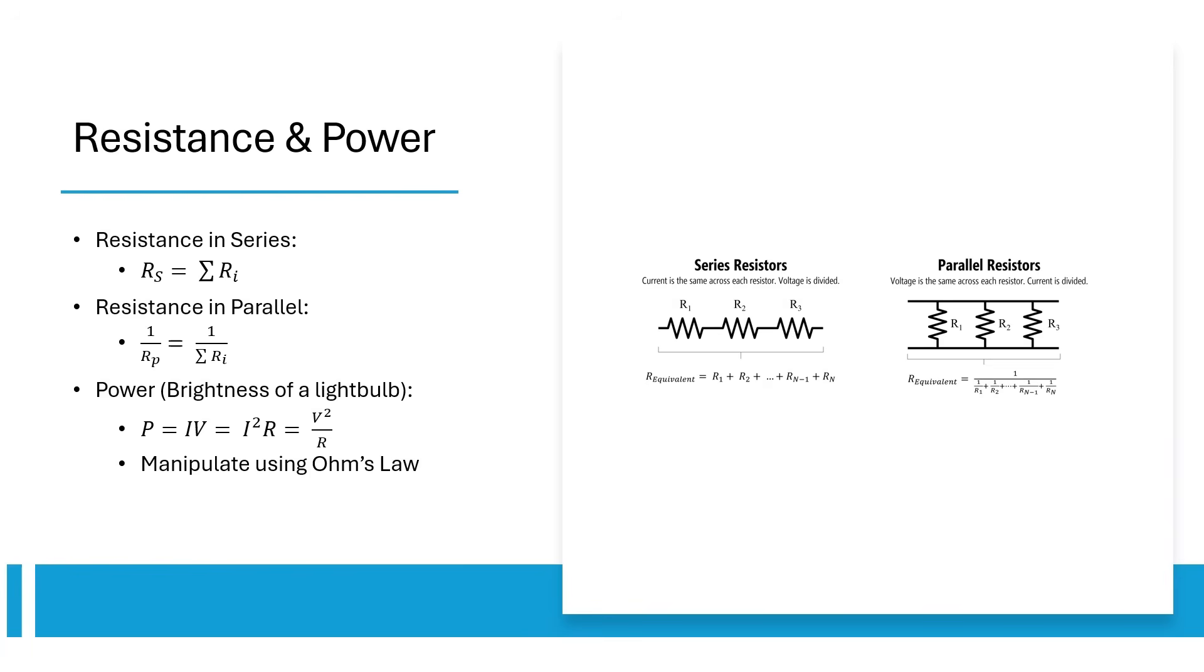Power represents the rate work is done, and is visually represented by the brightness of something like a light bulb. It equals IV, I squared R, and V squared over R, which are all equal according to Ohm's law.